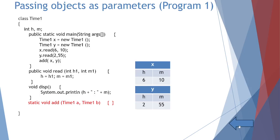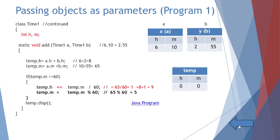In the add method — static void add(Time1 a, Time1 b) — a is the alias for x, b is the alias for y. We have 6 hours 10 minutes and 2 hours 55 minutes. To add them: a.h + b.h = 6 + 2 = 8 hours, and a.m + b.m = 10 + 55 = 65 minutes. We store this in a temporary object: Time1 temp = new Time1().